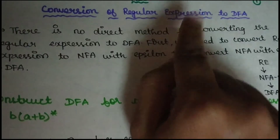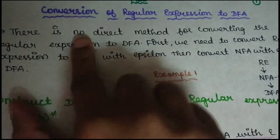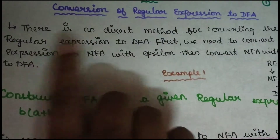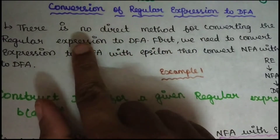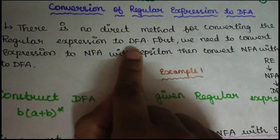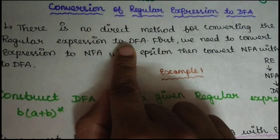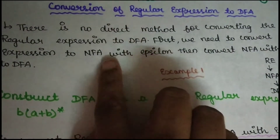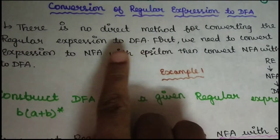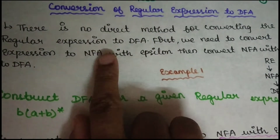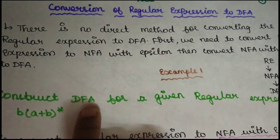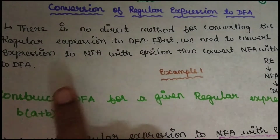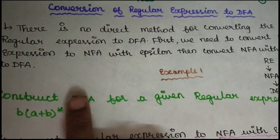There is no direct method for converting Regular Expressions to DFA. In regular expressions, you cannot convert to NFA directly. But regular expressions can be converted to DFA. So what do we do here? First, regular expressions convert to NFA with epsilon. If you convert NFA with epsilon, we will then convert to DFA.